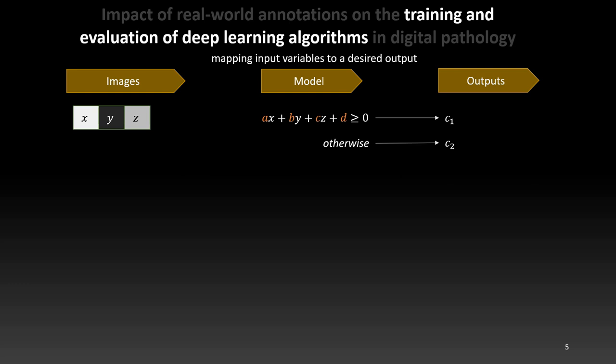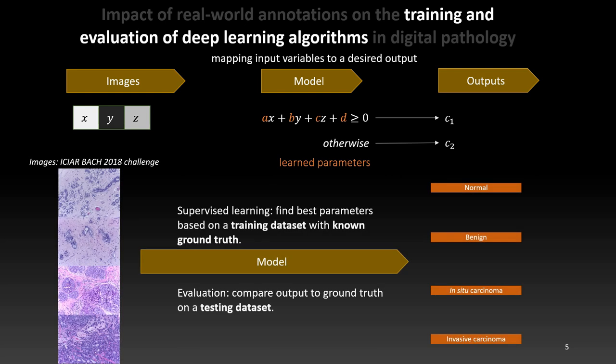One of the simplest models we can have is a linear model. We could, for instance, have output is c1 if ax plus by plus cz plus d is above zero and c2 otherwise. In this case, a, b, c, d are the parameters of the model. And training the model means finding the best values for these parameters so that the output is as correct as possible. In supervised machine learning, finding the best parameters is done by using a training dataset containing examples where the expected output is known.